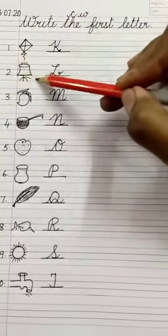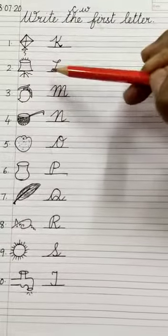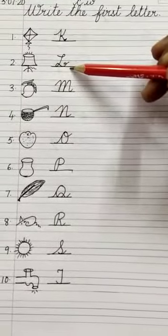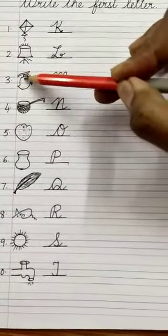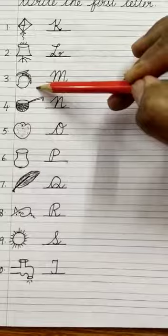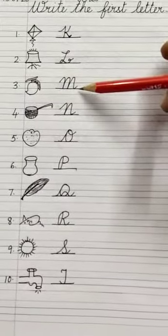Number two, you will draw a lamp and write letter L. Number three, you will draw a mango like this in four lines and write letter M.